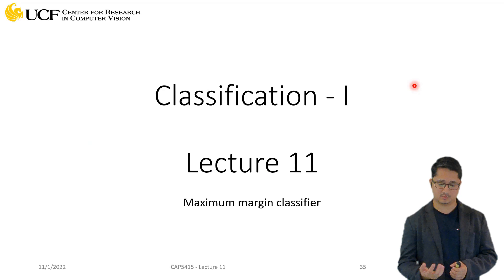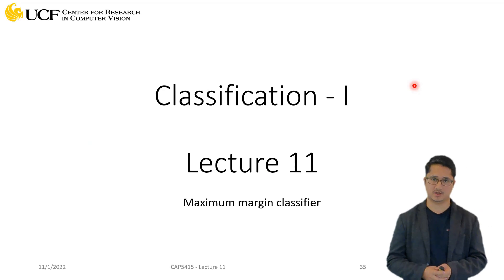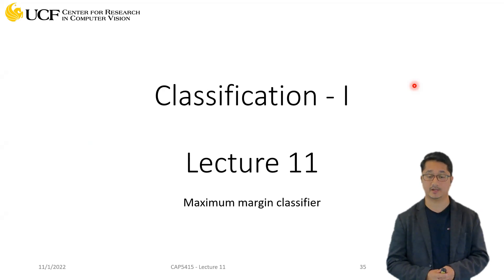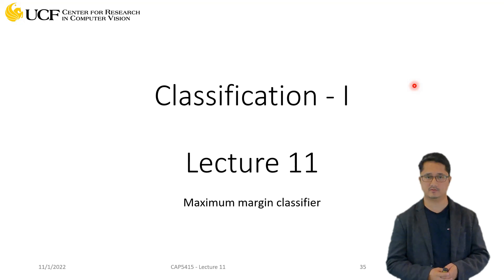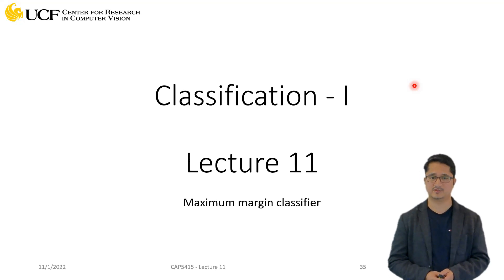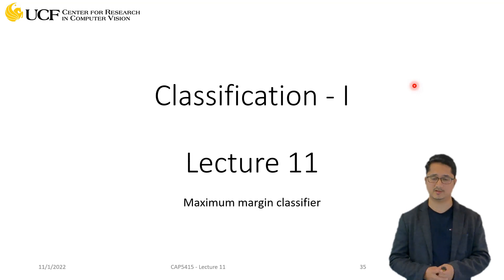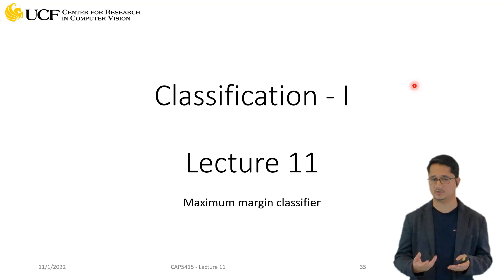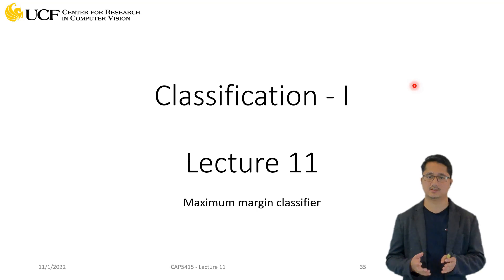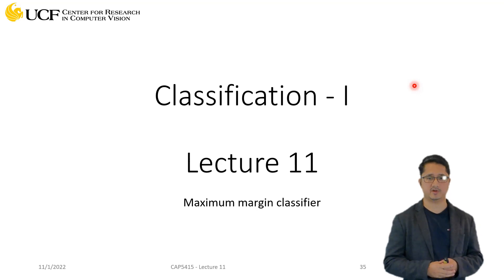Now we are going to talk about maximum margin classifier. This is based on decision boundaries like those we discussed for nearest neighbor, but we'll see how we can actually learn them efficiently given training data. In nearest neighbor there was no training involved, but in this case we will perform some training.